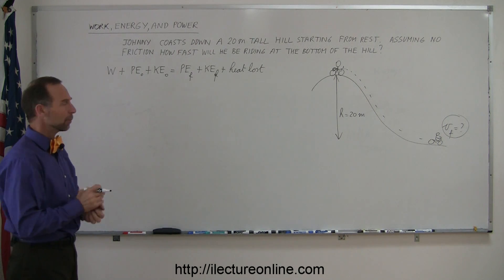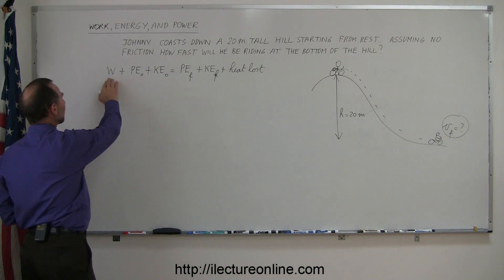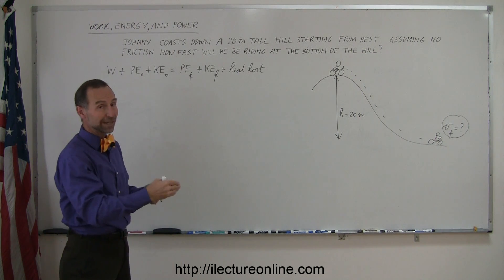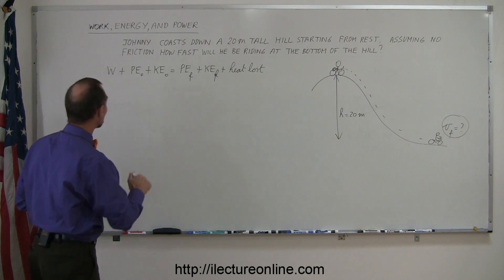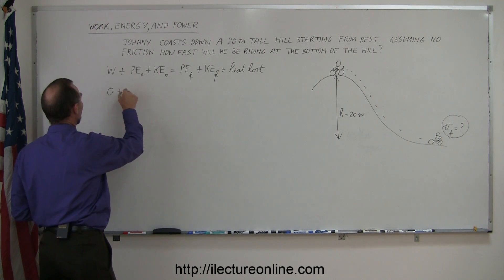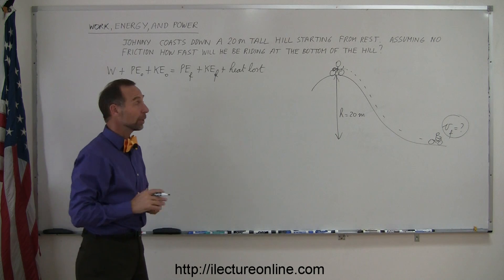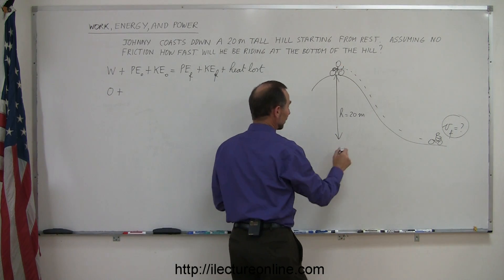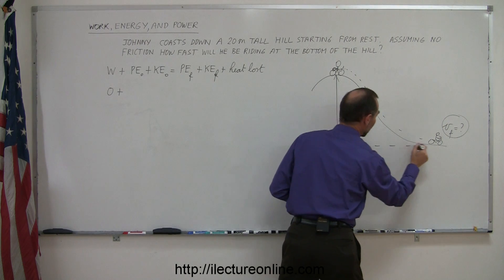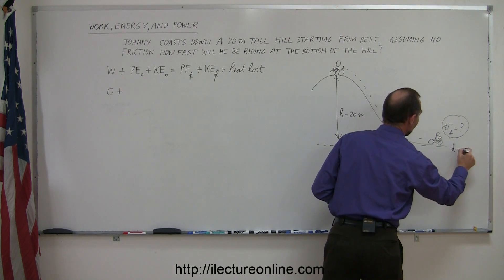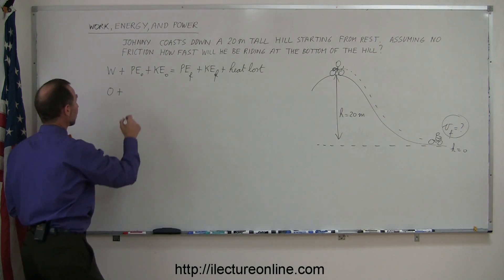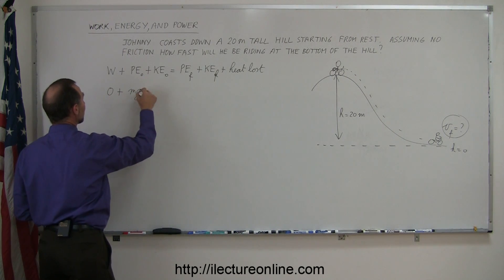So let's plug in what we know. Is there any work input? In other words, is Johnny pedaling and adding energy to the system? If he's just coasting, not pedaling, then there's no work input. How about potential energy initially? Well, he starts at the top of a hill. And if we consider the bottom of the hill to be our reference height, if h equals zero is at the bottom of the hill, then he definitely did have some potential energy when he started. And that potential energy will be MGH.